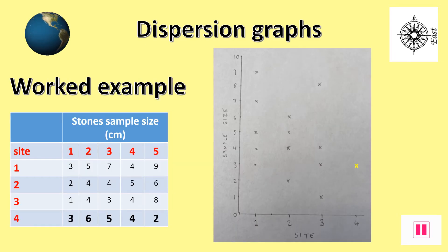Here we have a typical exam question with a table of data on the left and a graph partly completed on the right. To the left we have a table which shows stone sample size for five different stones at four different sites. If we look carefully at the graph on the right we can see that sites 1 to 3 have already been completed where they have put little crosses for each stone sample.